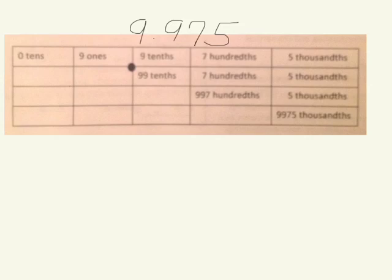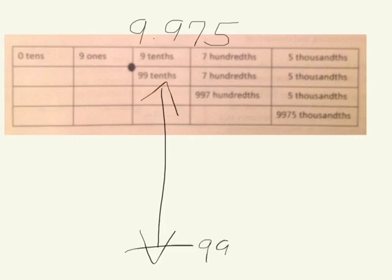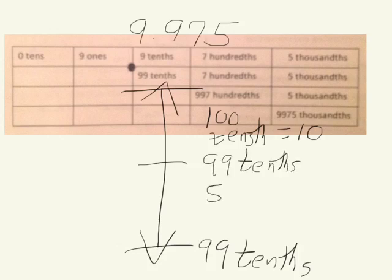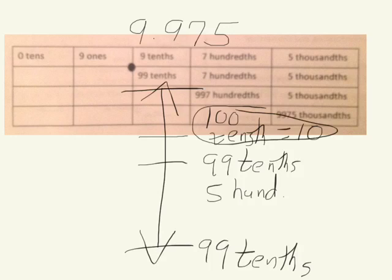Now we'll round our number to the nearest tenths place. Our vertical number line shows 99 tenths at the bottom, and one more tenth gives us 100 tenths, which equals ten. Halfway between would be 99 tenths and 5 hundredths. In our chart, we see 99 tenths and 7 hundredths, which is above that midpoint line. This number rounds up to 100 tenths, or ten.